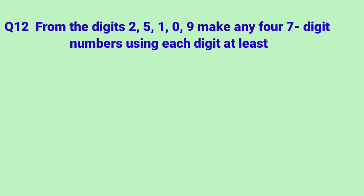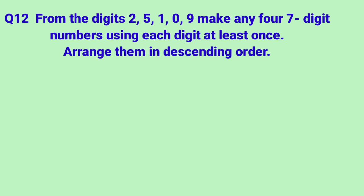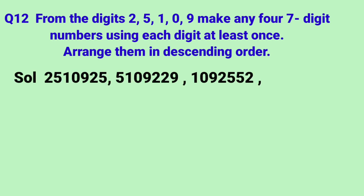Let's see question number 12. From the digits 2, 5, 1, 0, 9 — make any 4 seven-digit numbers using each digit at least once, then arrange them in descending order. It is given that these 5 digits must each be used once, and then we can repeat any one of these digits. So let's make 4 seven-digit numbers using all these digits, repeating some as needed. These are all the seven-digit numbers formed using these digits with some repeated.